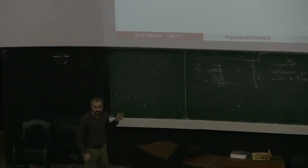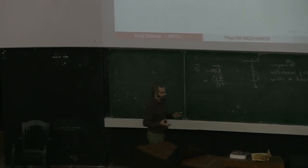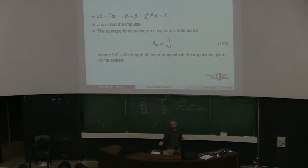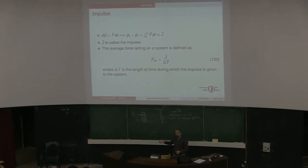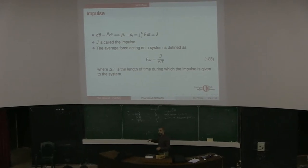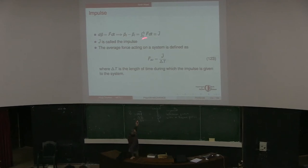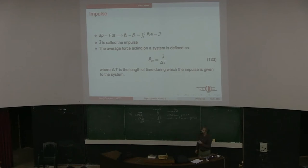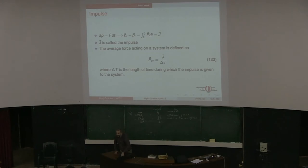The average force will be smaller. Initially the egg has some potential energy which is transferred into speed, so it will have a finite momentum just before impact. After impact, it stops — the change in momentum is the same. The impulse is the same. The only thing you have control over is how long it takes for the egg to stop. If it takes a longer time — like with a very soft pillow — delta T is longer, so the average force will be much smaller, and the egg might not break.